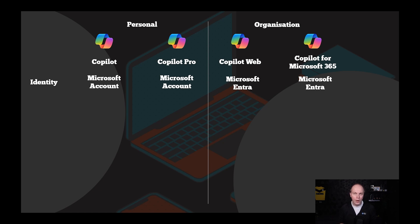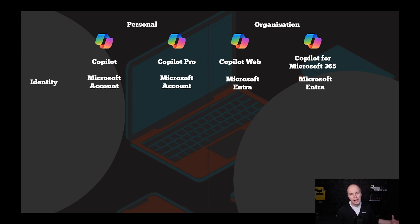Copilot Web — this is what was formerly known as Bing Chat Enterprise. The ability to use DALL-E 3 and to ask things like 'Can you tell me what's going on in the news today?' and it goes off, uses the Bing Index, and brings back a response based on what it sees on the web. It doesn't look at what's going on inside your cloud data.